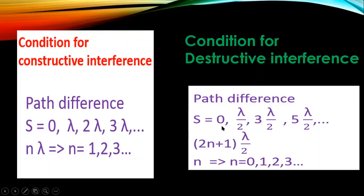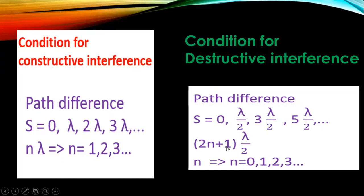If the path difference is λ/2, 3λ/2, 5λ/2 — notice that λ/2 is constant and the multiplying values are odd integers — then this path difference gives destructive interference. Taking λ/2 as common, you can write it as (2n+1)λ/2, where n = 0, 1, 2, 3. Multiplying any number by 2 gives an even number, but adding 1 makes it an odd integer. An odd integer multiplied by λ/2 always gives destructive interference.